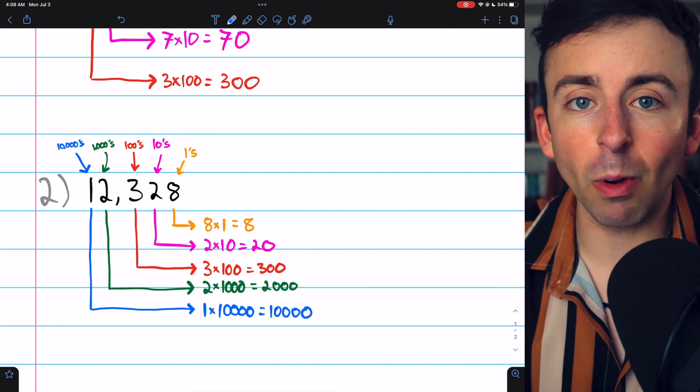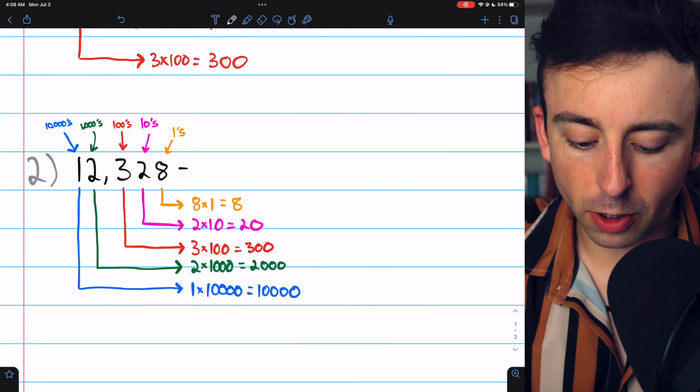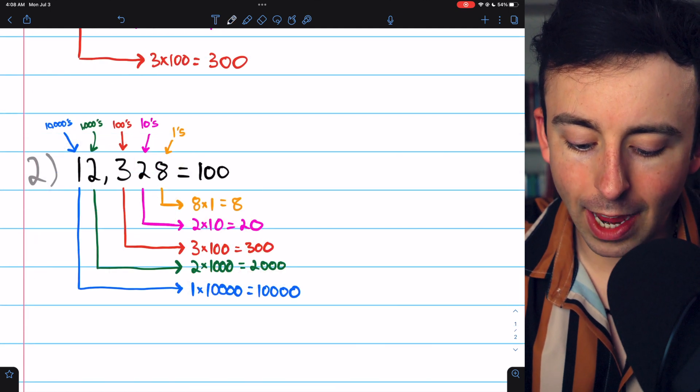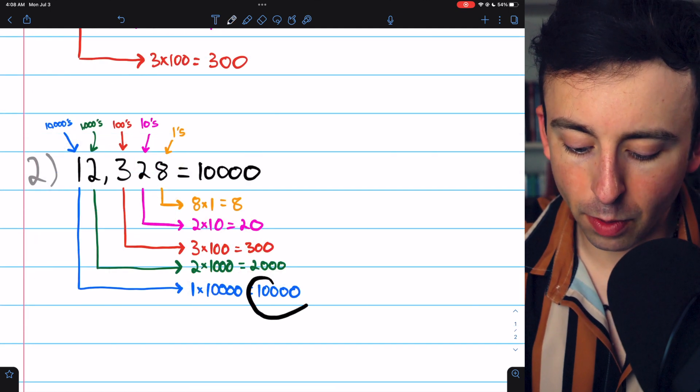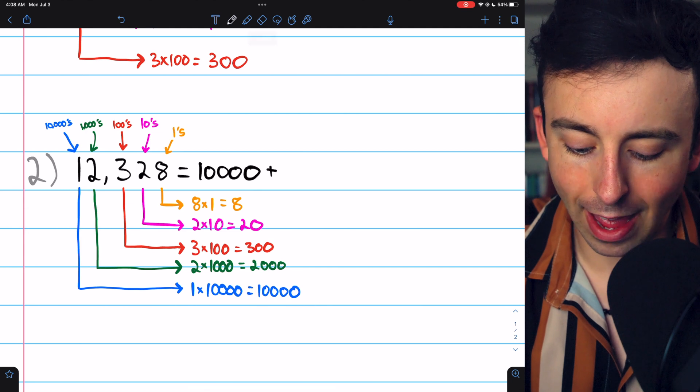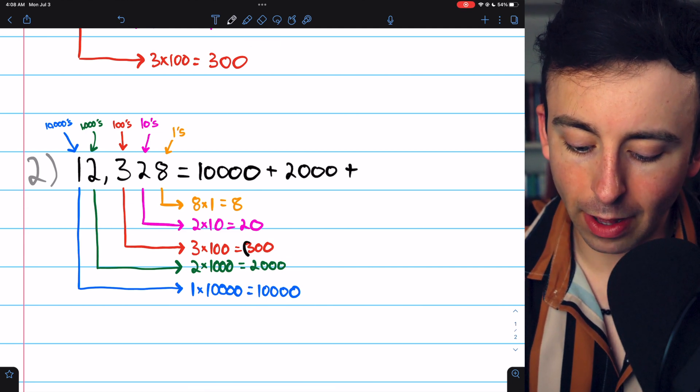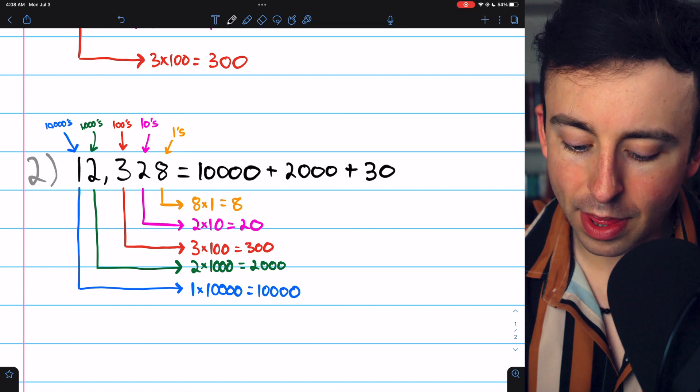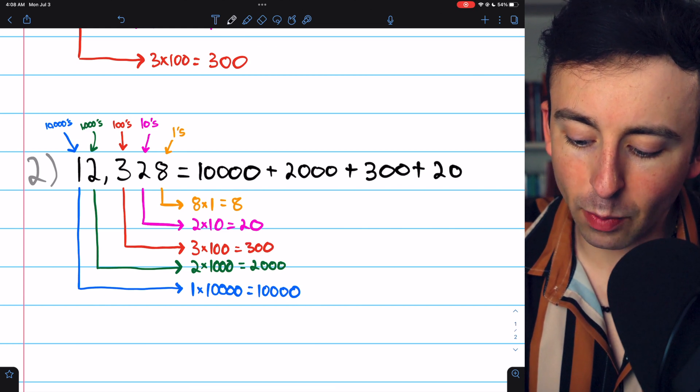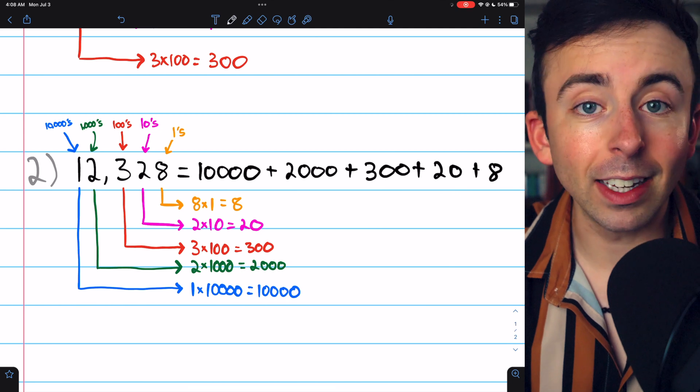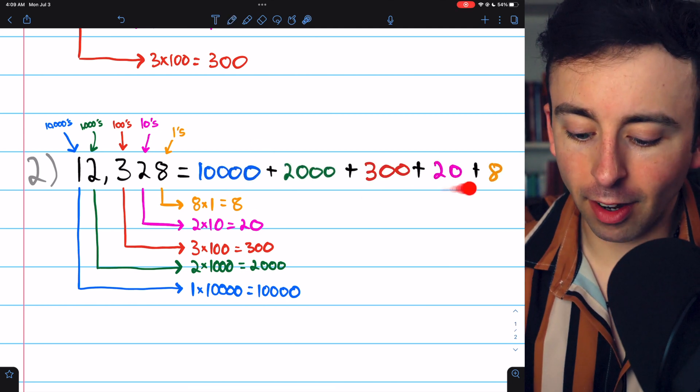With all this broken down, we can write it in expanded form. I'll color code it after I write it out. Again, beginning with the largest place value, we have 10,000, then we have 2,000. We're adding it all together. The next place value is 300, then we have 20, and then we have 8, and that's the number in expanded form. And there it is color-coded.